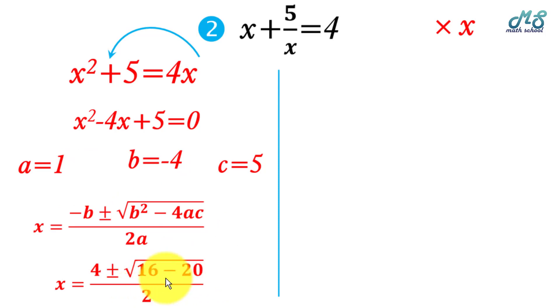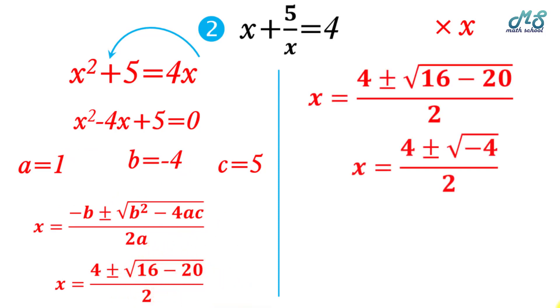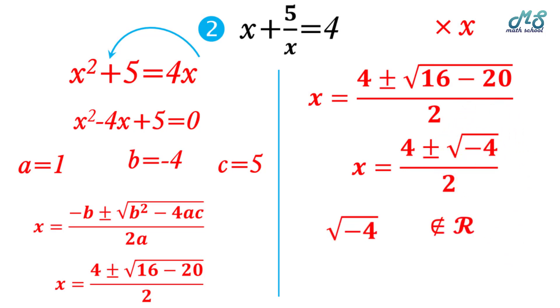Since 16 minus 20 equals negative 4, and the square root of negative 4 is not a real number, we can deduce directly that the solution set of the equation x plus 5 over x equals 4 is the null set, phi.